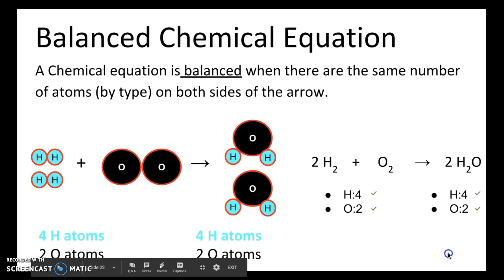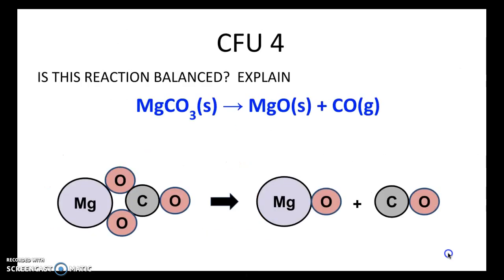So in order to have a balanced chemical equation, you need to have the same number of atoms on both sides. Let's try the CFU. I want you to see if this reaction is balanced. If it's balanced, explain by saying how many atoms on each side. And if it's not balanced, explain by saying what isn't balanced and why. Pause the video now — when you press play again, the answer will be revealed.